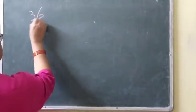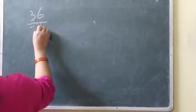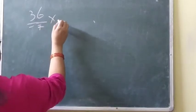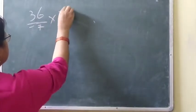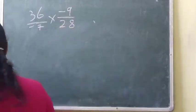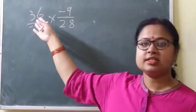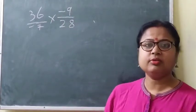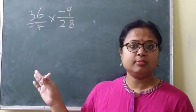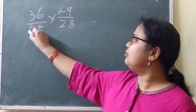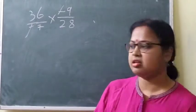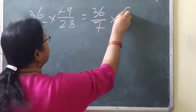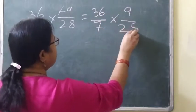Now the next question: 36 by minus 7 into minus 9 by 28. Again, what we can do? We can cancel the minus signs, because both the numerator and denominator have minus signs. So we can cancel. Now we have 36 by 7 into 9 by 28.